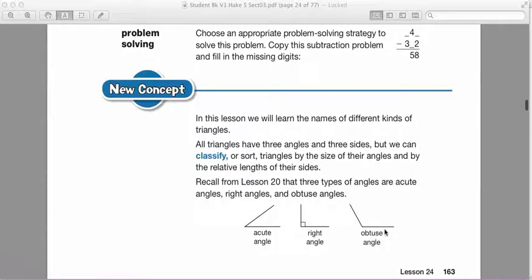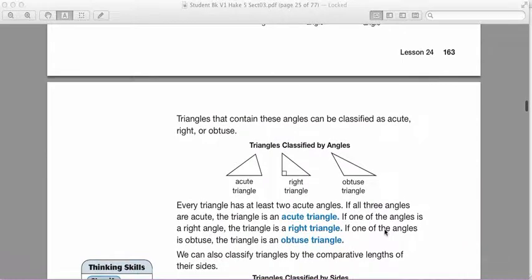So today we're going to talk about how we look at triangles and classify them. So there are two ways for us to classify triangles. The first is by looking at their angles. So we have an acute triangle.